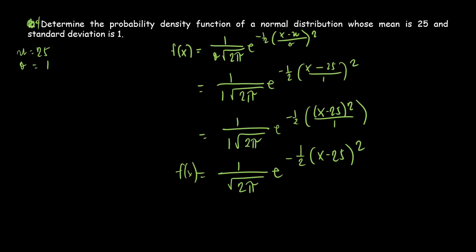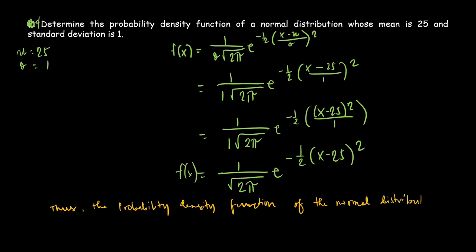For the conclusion: Thus, the probability density function of a normal distribution is f(x) equals 1 over square root of 2π times e to the power of negative one-half times (x minus 25) squared. That's the answer. If you have questions and clarifications, you can comment down below and I will do my best to answer. Thank you for watching. Bye.